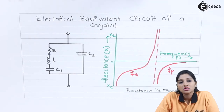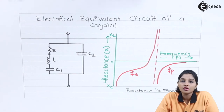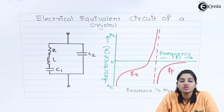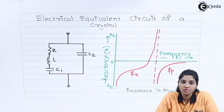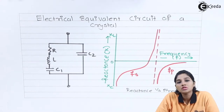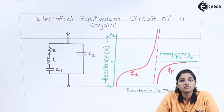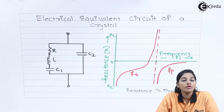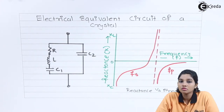We know that a crystal oscillator is basically a material which exhibits a property of piezoelectric effect. Quartz crystal is a material which is most commonly used for construction of a crystal oscillator. So whenever an AC input signal is applied across a quartz crystal material, it starts producing mechanical vibrations at the output. The frequency of output vibration is similar to the applied AC input signal.